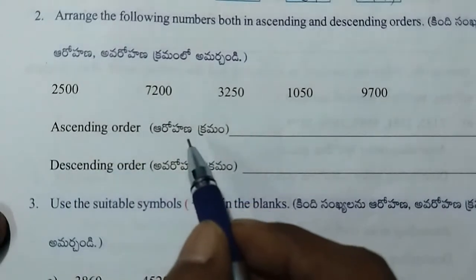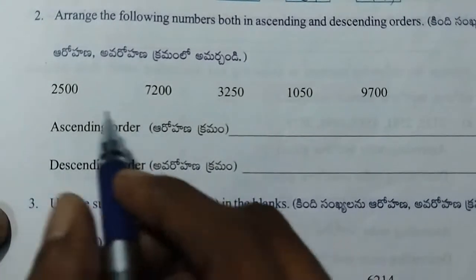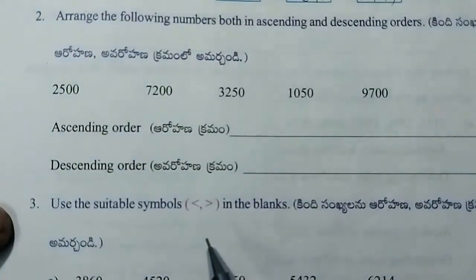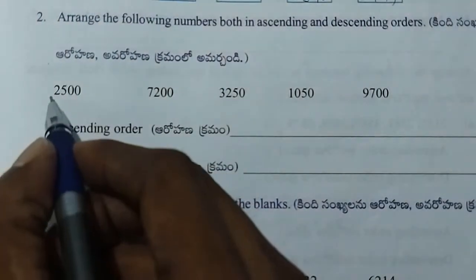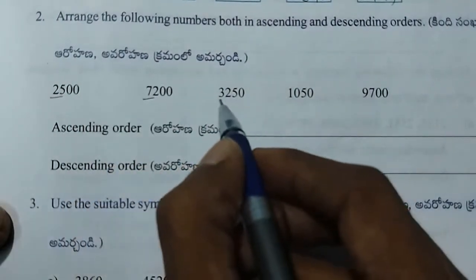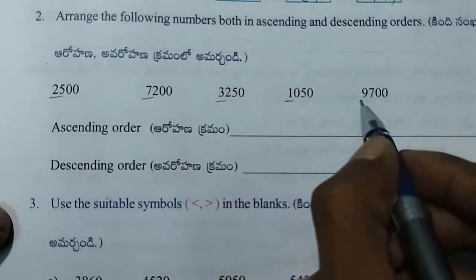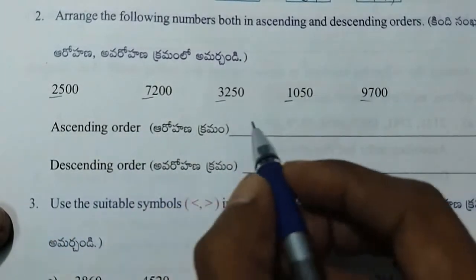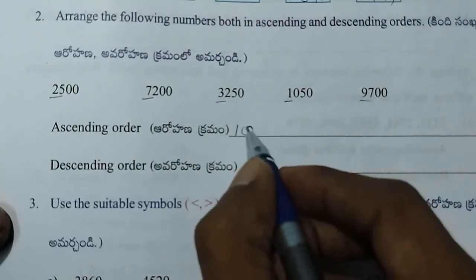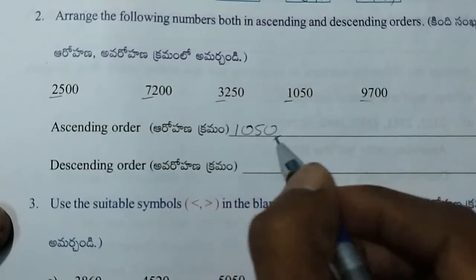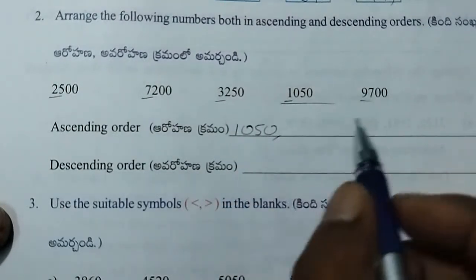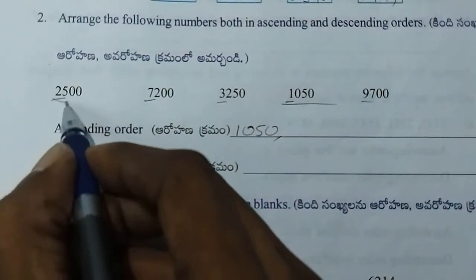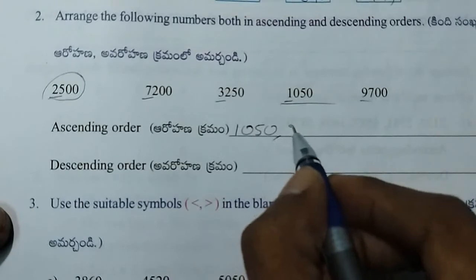Ascending order is small to big. The numbers are 2, 7, 3, 1, 9. The small number is 1, so the first number is 1,050. Next, 2 is the next small number, so the next is 2,500.